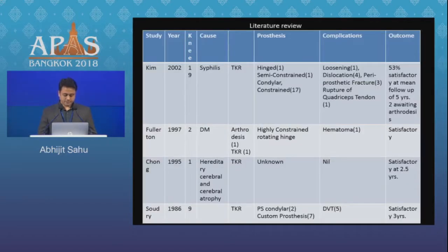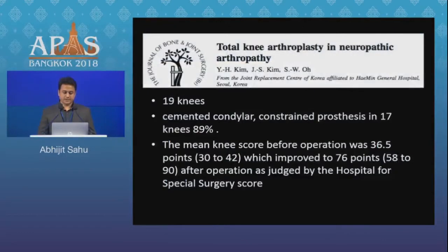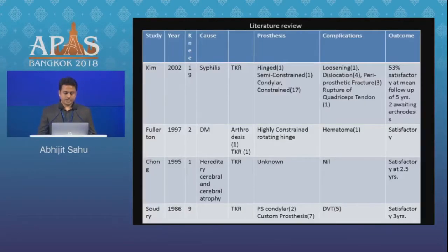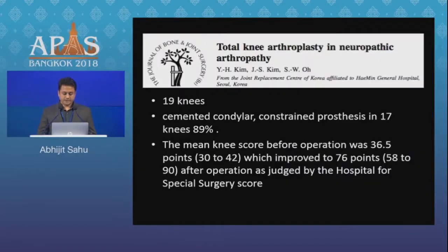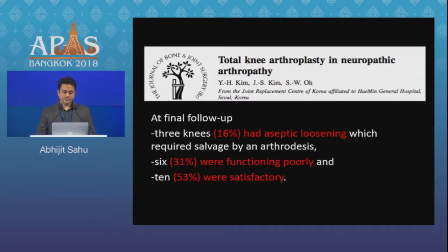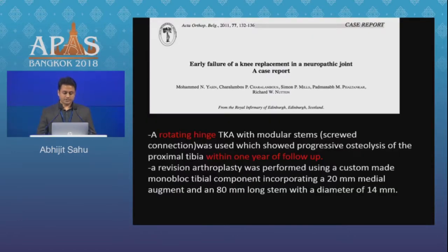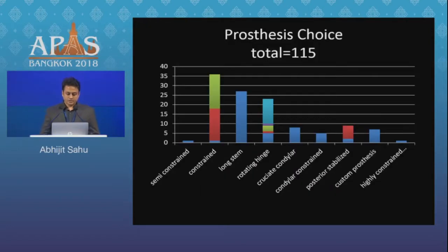Sodry used custom prostheses and a PS condylar implant and reported satisfactory results. Kim published a study of 19 knees; he used constrained knees in 89% of patients and reported a complication rate of 47%. 53% of his patients were satisfactory at a mean follow-up of five years and 31% were functioning poorly. Yasin reports a case of a single patient with a rotating hinge which showed progressive osteolysis within one year of follow-up and had to be removed. The choice of prosthesis across all these studies is constrained knee followed by long stem and rotating hinge.